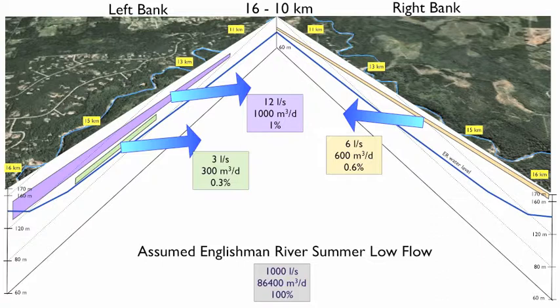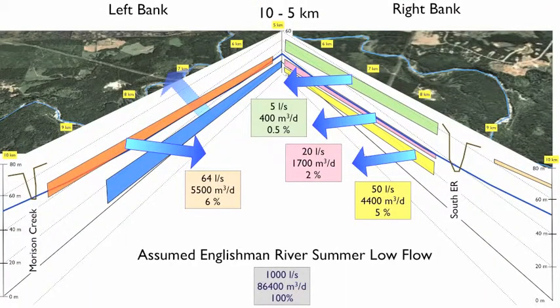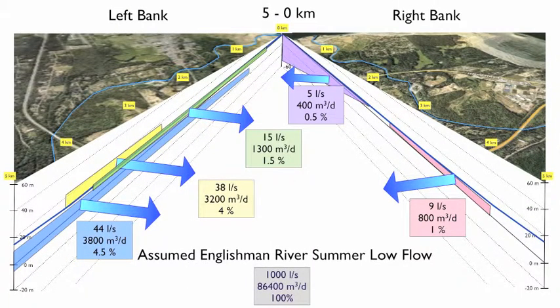Between 16 and 10 kilometers, the aquifers are providing water to the Englishman River, but only slightly, with fluxes representing approximately 2% of the summer low flow. Between 10 and 5 kilometers, there are more aquifers; they are thicker and provide larger fluxes, together supplying over 13% of the summer low flow. As we continue down the river between kilometer 5 and the estuary, there are several aquifers on both banks with complex geometry, providing an estimated 10% of the summer low flow.